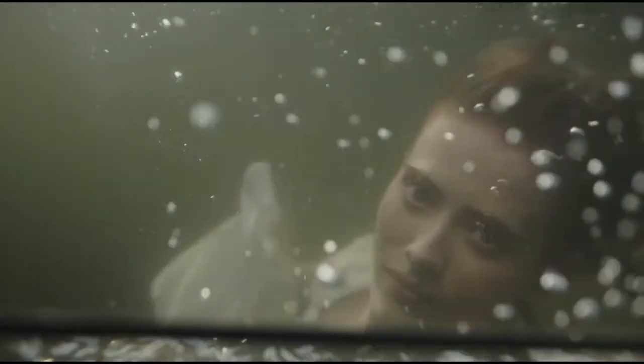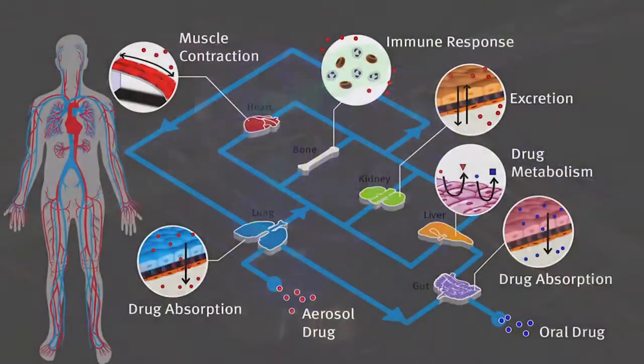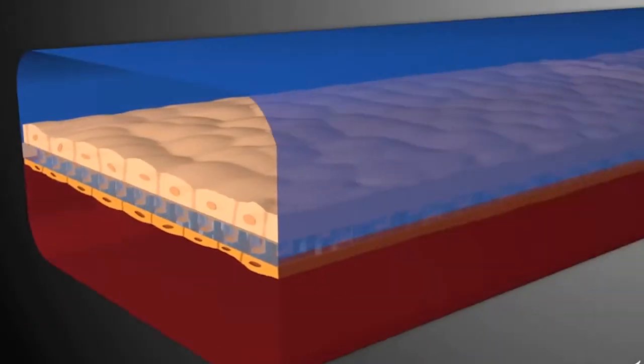While individual organs on chips hold enormous potential for understanding and testing organ-specific effects, the human body is more complex than what an individual chip can replicate, which is why researchers are working to link individual organs on chips into one virtual human. The goals are to gain new insight into diseases and to predict how a drug will affect an individual organ as well as the rest of the body.